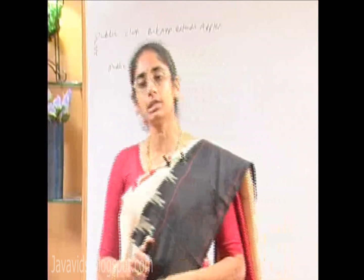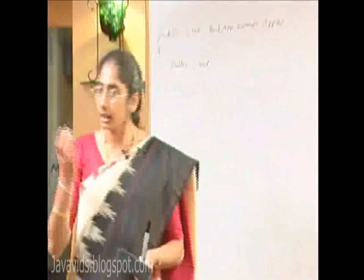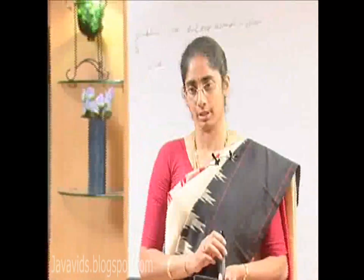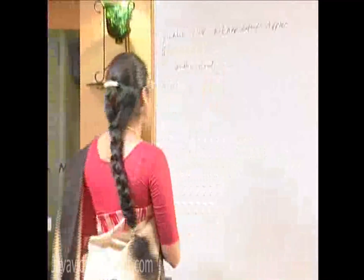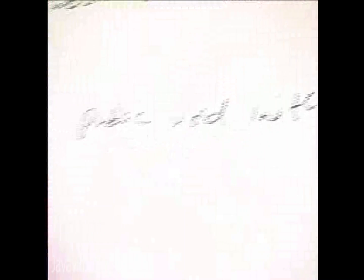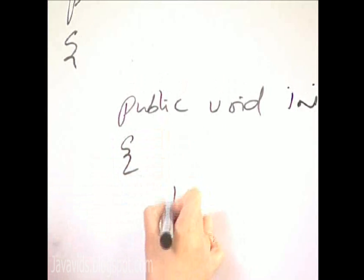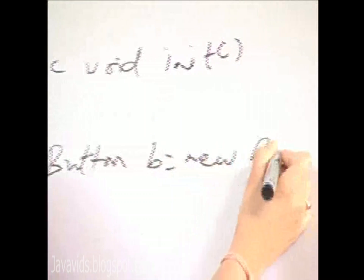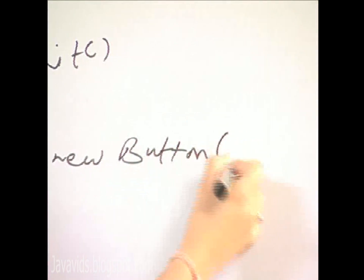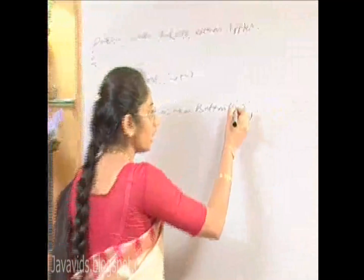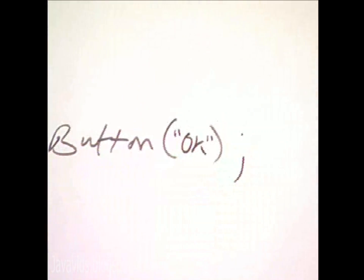If I put the creation of components into the start method, every time the applet goes out of focus and comes back, I get another set of components, which you wouldn't want. So put it into the init method. To create a button object, you say: Button b = new Button(), and you can pass a string here which is the label of the button.